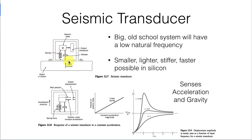This one is a single-axis transducer. It's got a mass, and it's being subject to motion in the vertical direction. It's possible to make multi-axis, three-axis seismic transducers, which would have springs mounted out in this direction, and also out in the third dimension with dampers as well, so that you could detect motions not only up and down, but side to side, and into and out of the display.